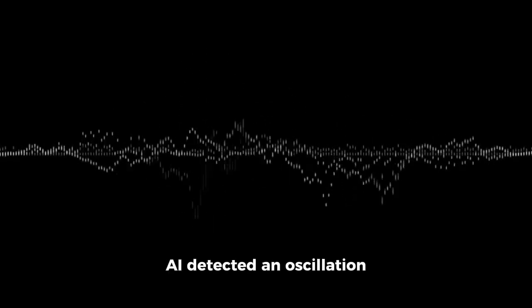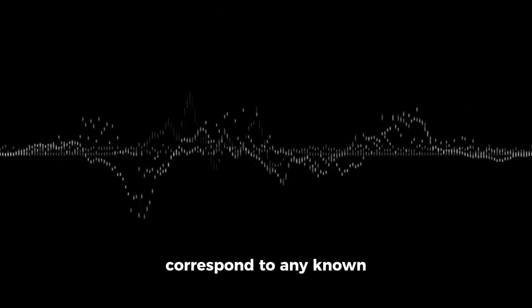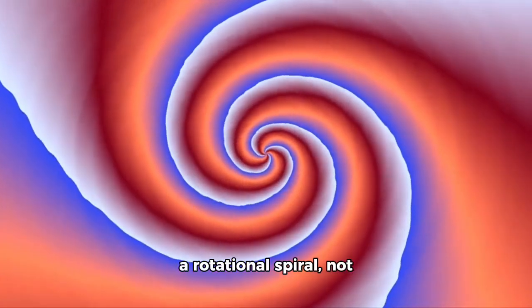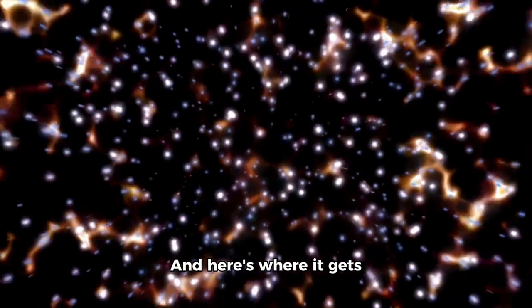However, in this void, the AI detected an oscillation pattern that did not correspond to any known error or artifact. When pictured, it formed a rotational spiral, not of matter, but of gravity distorted. And here's where it gets chilling.